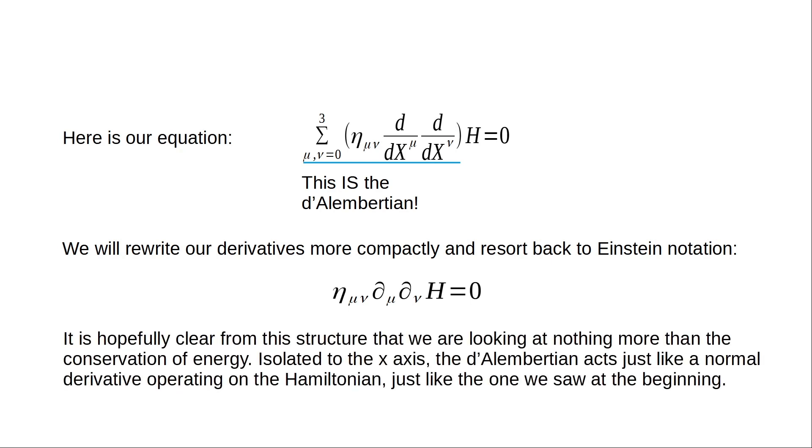It's hopefully clear from this structure that we're looking at nothing more than the conservation of energy itself. When we look at just the x-axis and the action and behavior of things on just the x-axis, this d'Alembertian looks like just a standard derivative, like the one we saw at the beginning. Both equal zero. This gives you all the details of the change of energy over flat spacetime.